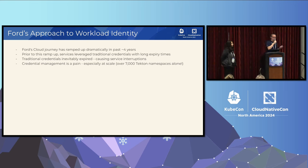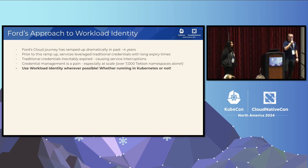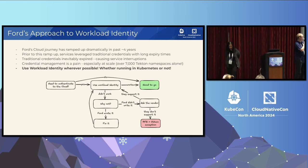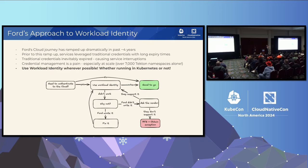It was decided that long-lived credentials for accessing cloud resources would be the exception, not the norm. Ford adopted a strategy: use workload identity wherever possible, whether running in Kubernetes or not. The flowchart is simple: if you need to authenticate to the cloud, use workload identity. If it didn't work when you tried it, fix it so you can use workload identity. If Ford didn't write it, talk to the vendor. If it doesn't support workload identity, you must obtain an exception. The preference is always to ask the vendor to support workload identity.